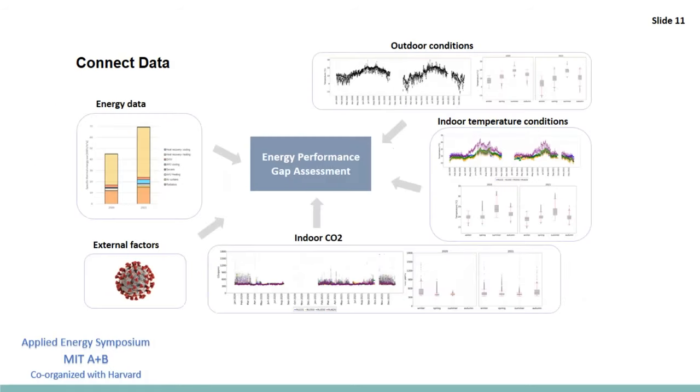So far we have seen a number of monitoring data: energy flows, indoor temperature, CO2 concentration and outdoor temperature. We have also discussed the impact that the pandemic had on the utilization of the building. We can now connect the data and get a better picture of the energy performance and indoor air quality condition within this building.